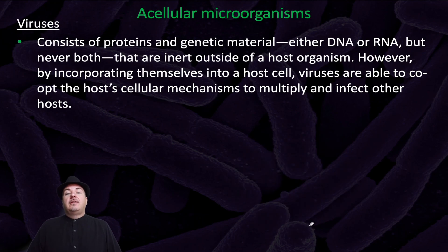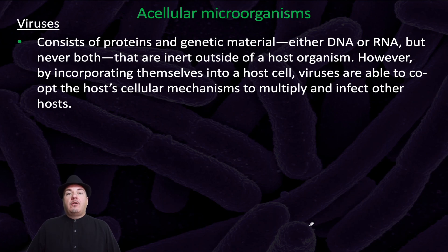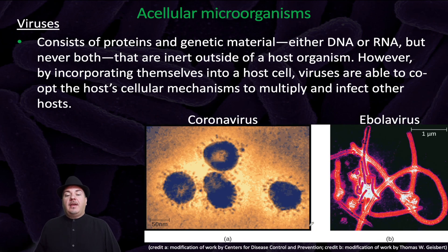Then we have viruses. Viruses consist of proteins and genetic material — either DNA or RNA, but never both — that are inert outside of the host organism. However, by incorporating themselves into the host cell, viruses are able to co-opt the host cellular mechanisms to multiply and affect other hosts. Examples include coronavirus, which we're very familiar with nowadays, and the Ebola virus.